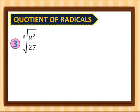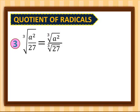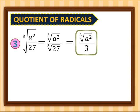Number 3: cube root of a squared over 27. We separate them, giving us cube root of a squared over cube root of 27. We copy the numerator, cube root of a squared, since we cannot simplify it further. But cube root of 27 equals 3. So for number 3, we have cube root of a squared over 3.